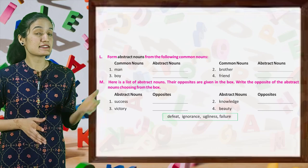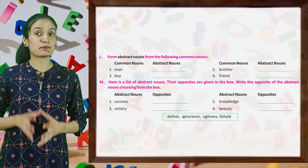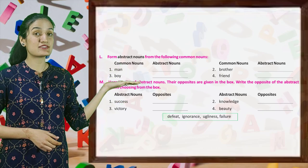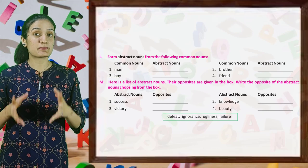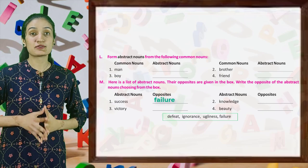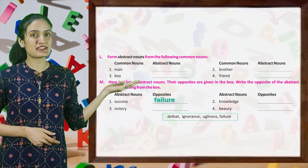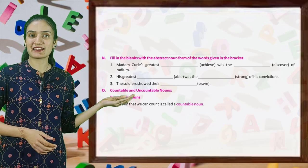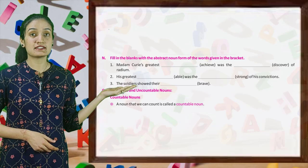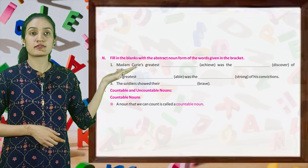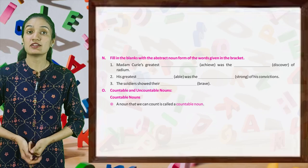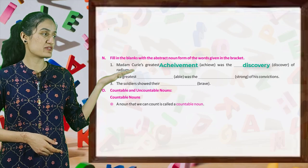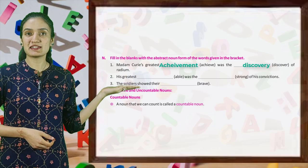Now, here is a list of abstract nouns and their opposites are given in the box. Write the opposite nouns choosing from the box. First, success — its opposite is failure. So kids, find the other opposites by yourself. Next, fill in the blanks with the abstract noun form of the words given in the bracket. For example: Madam Curie's greatest achievement was the discovery of radium. Now do the rest, filling the blanks by yourself.